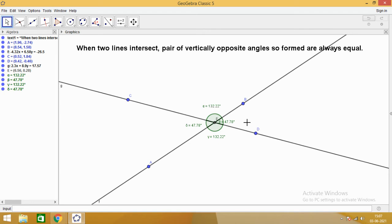Similarly, the second pair of vertically opposite angles, that is angle CEA and angle DEB, they are also equal.